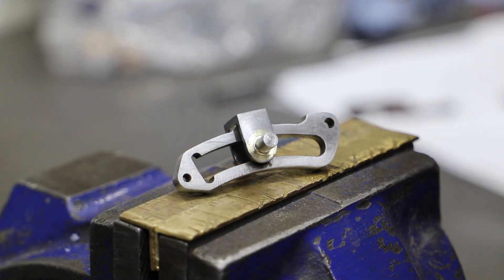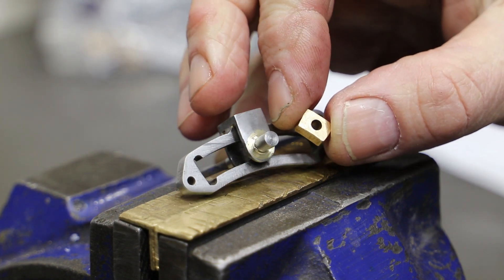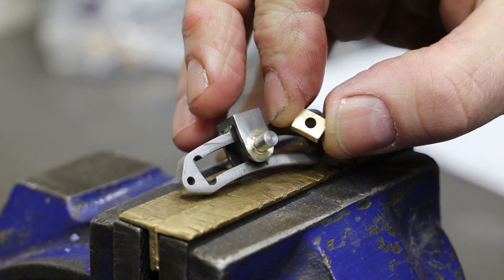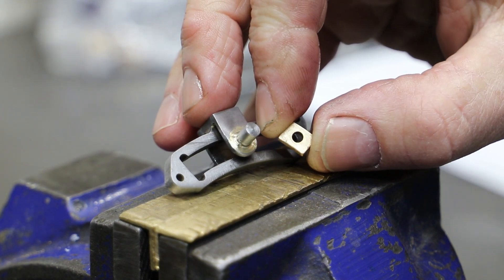When I get to the joint between the radius rods and the expansion link die blocks, I realize that when I made the die blocks, I drilled the holes out at 3.2mm rather than 3mm, which is more than a little bit annoying.